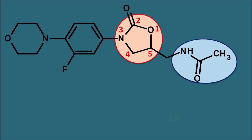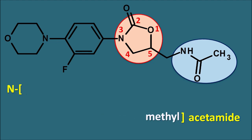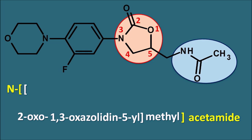The IUPAC name is written with the suffix acetamide. This acetamide is attached with a methyl group, so we write N-methyl acetamide. This N-methyl acetamide is attached to the oxazolidin ring at the fifth position. The ring has heteroatoms at the first and third positions, so we write 1,3-oxazolidin-5-yl. The ring also has a ketone at the second position, so we add 2-oxo.